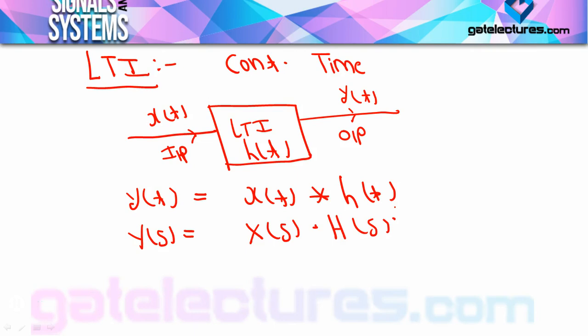One more point here: the word 'convolution' that we keep using — suppose you don't know its definition right now. Just wait for the numericals. When we do numericals, especially when I explain the graphical method in discrete domain, the definition will become completely clear to you. For now, think of it as a different type of multiplication of two signals.